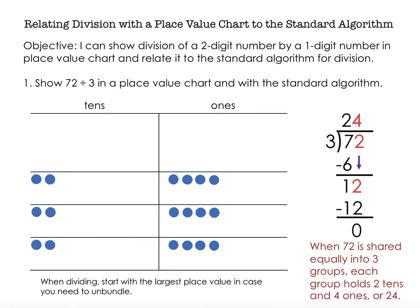So when 72 is shared equally into 3 groups, each group holds 2 tens and 4 ones, or 24. So each group has 2 tens and 4 ones. 72 divided by 3 gives me 2 tens and 4 ones.